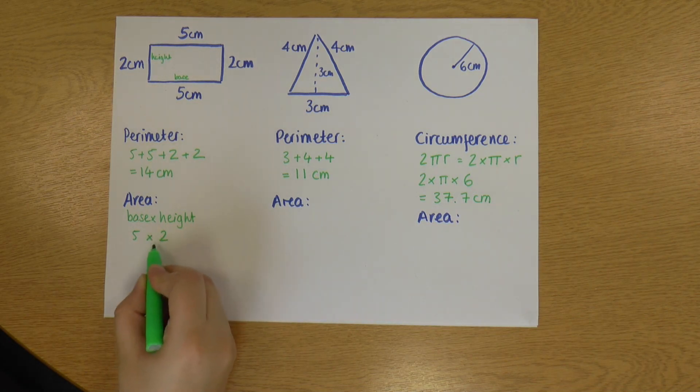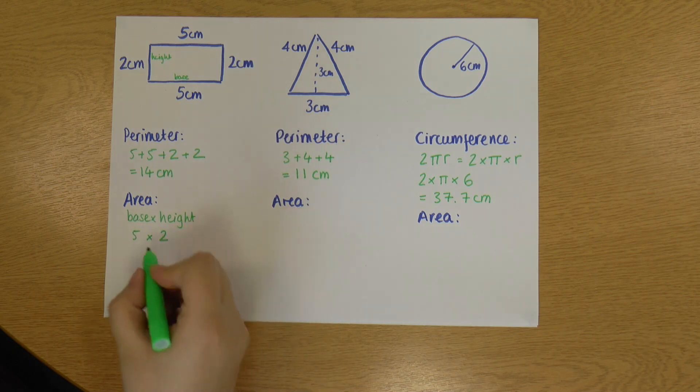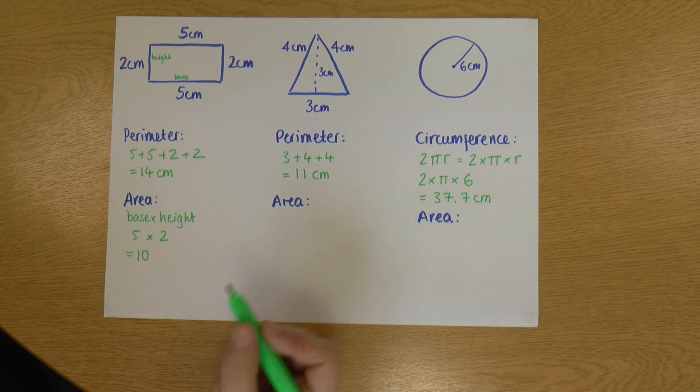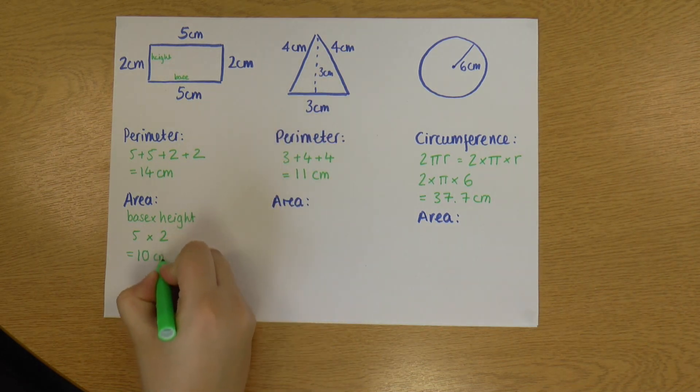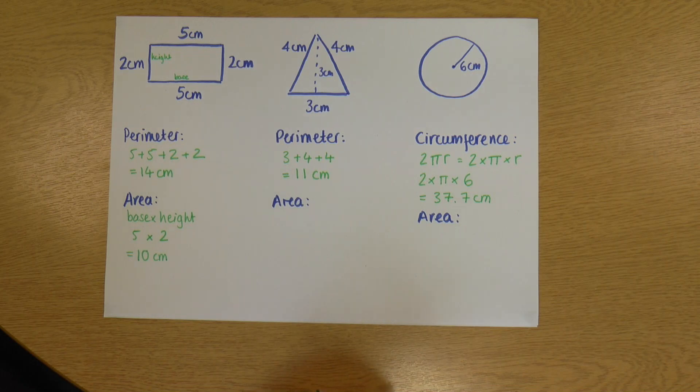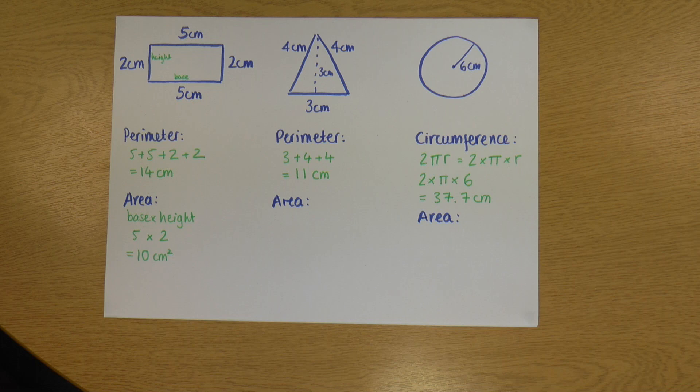So notice this time it's a multiply, not an add. So 5 times 2 is 10. And my area is in units squared. So my units here are centimeters, so it will be centimeters squared. So 10 centimeters squared is my area.